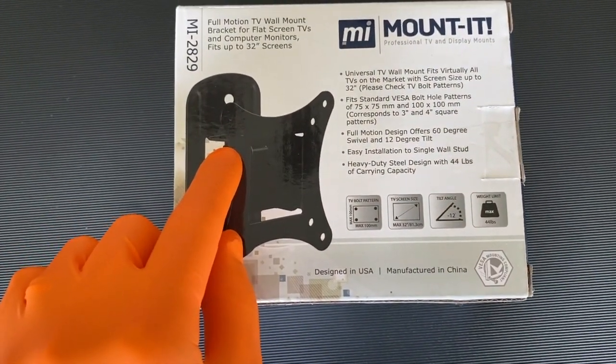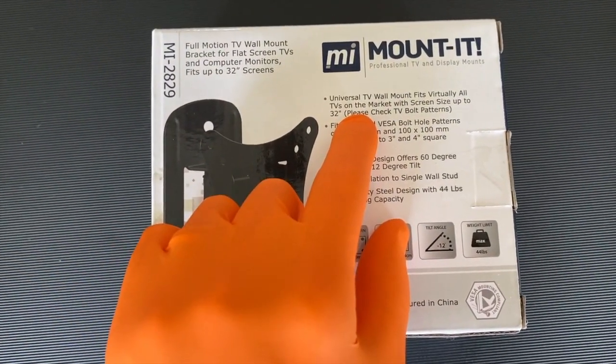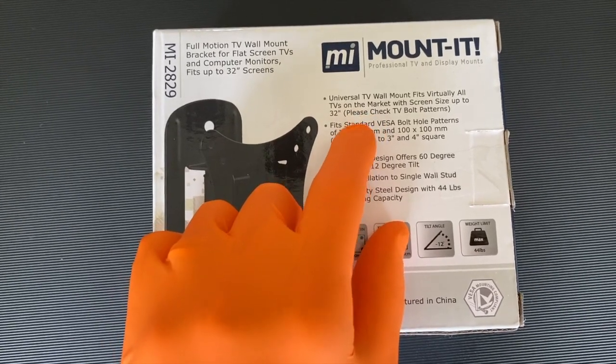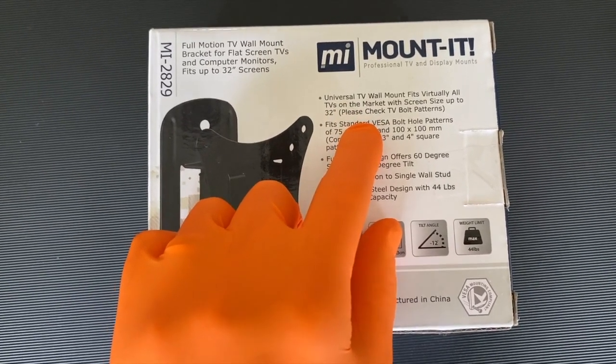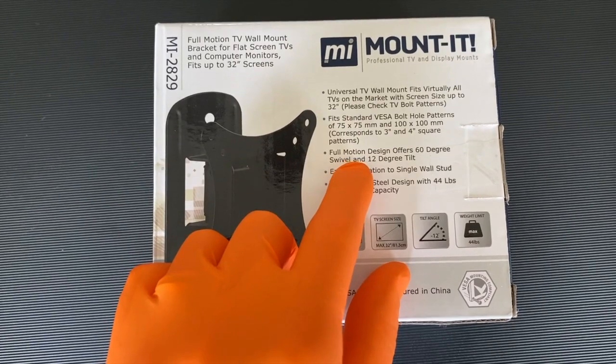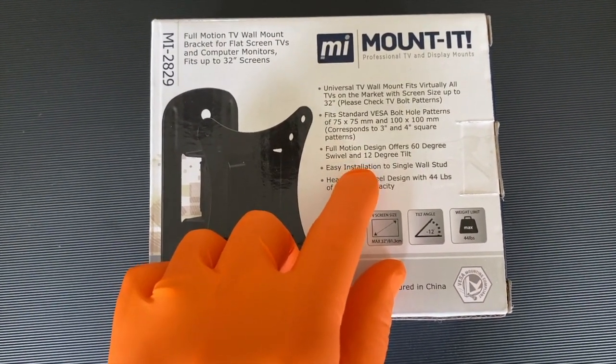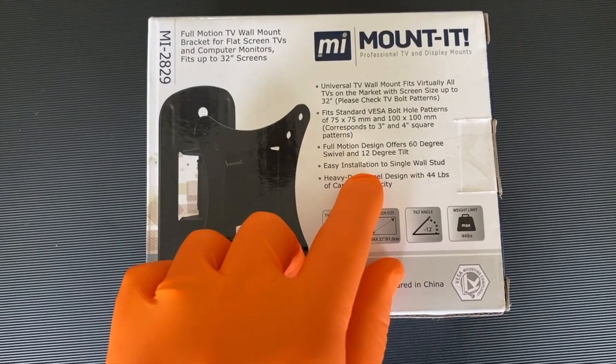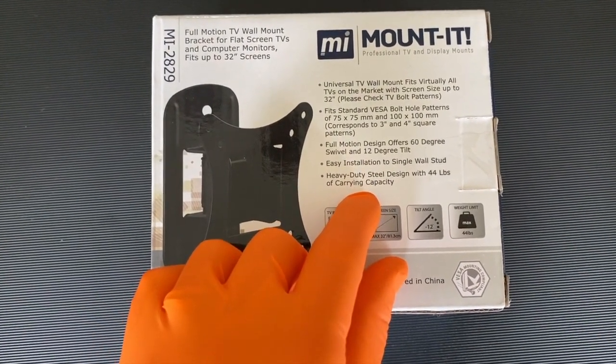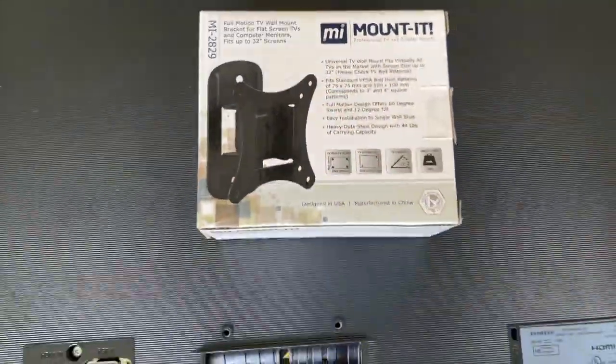Universal TV mount fits virtually all TVs on the market with screen sizes up to 32 inches. Please check TV bolt patterns. Full motion as I just mentioned, designed to offer 60 degree swivel and 12 degrees tilt. Easy installation to single wall stud, heavy-duty steel design with 44 pounds of carrying capacity. So let's go and open it.